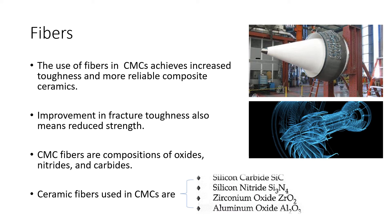Fibers are used in CMCs to increase toughness and make ceramics more reliable, because traditional ceramics are not very reliable — they break. So we're trying to make ceramics strong but resistant to breaking. For improvement in fracture toughness, we actually reduce the strength. Don't confuse being tough with being strong — fracture toughness means resisting fracture; in order to resist cracking you have to reduce the strength of the material.